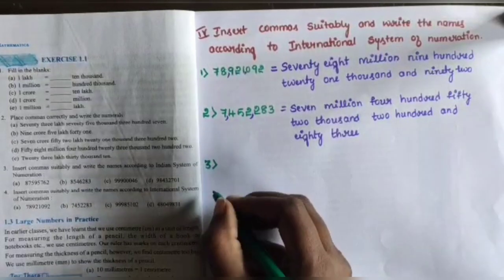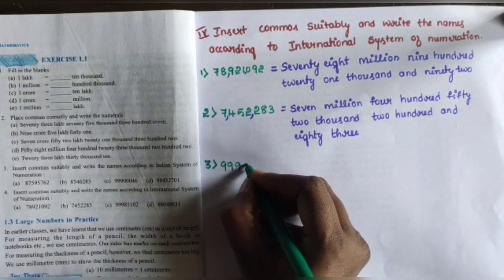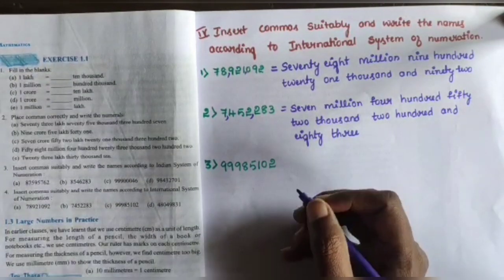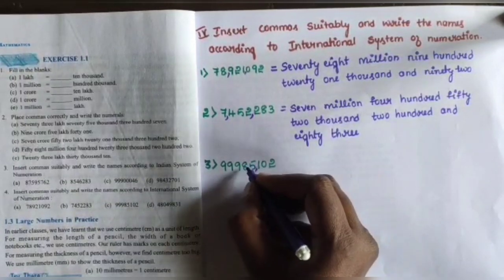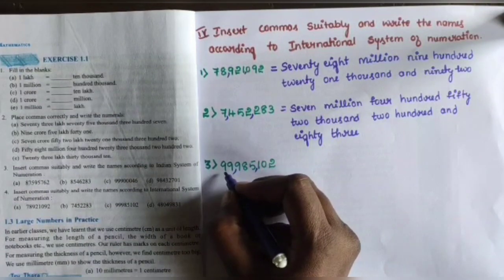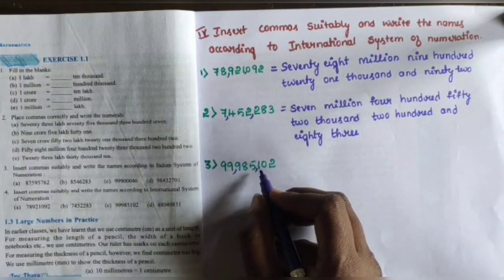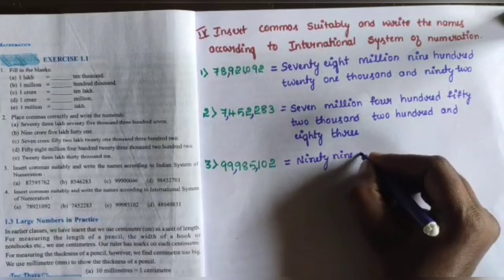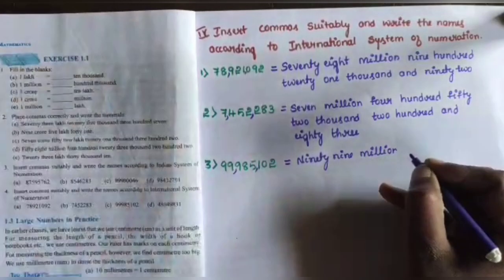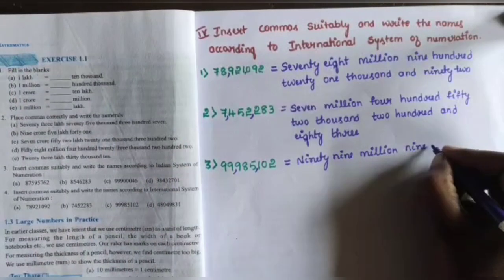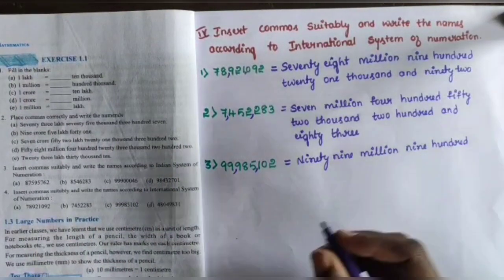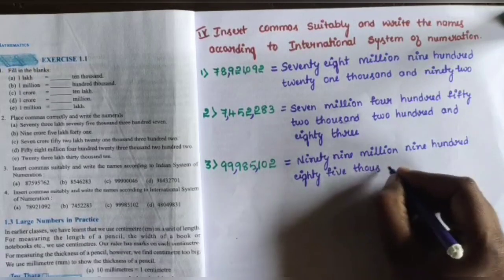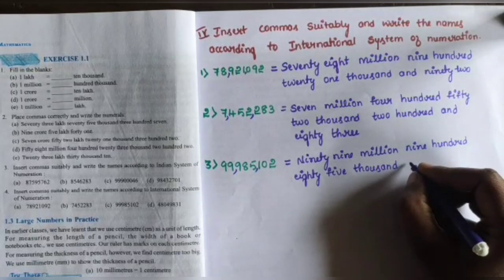Next question number three: 99,985,102. Insert commas according to the International system of numeration — units, tens, hundreds, thousands, ten thousands, hundred thousands, millions, ten millions. Written in words: ninety-nine million, eight hundred eighty-five thousand, one hundred and two.